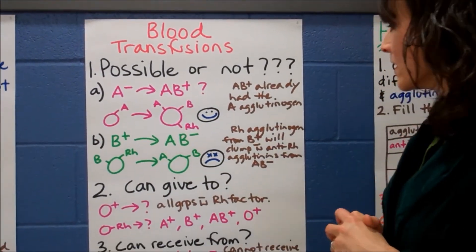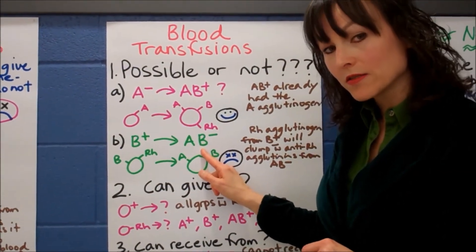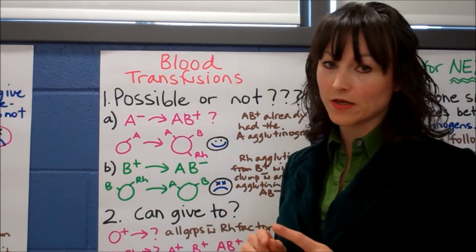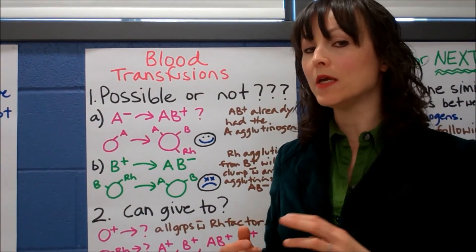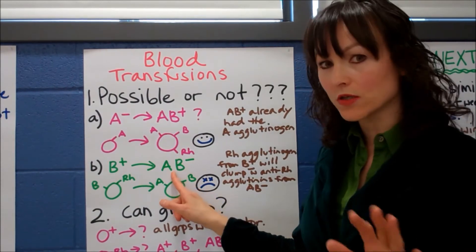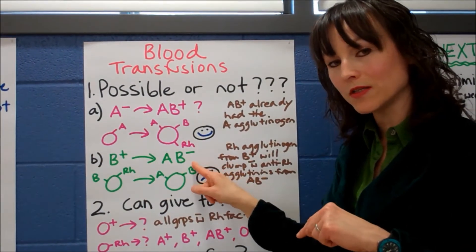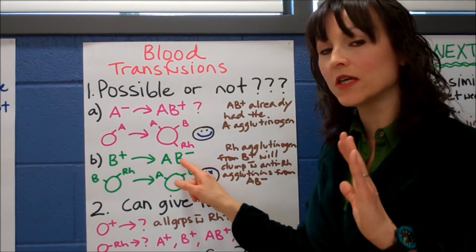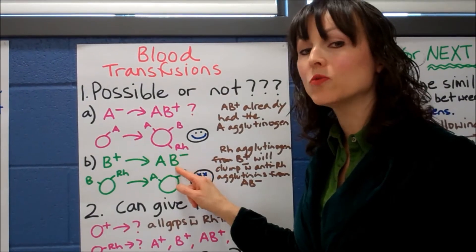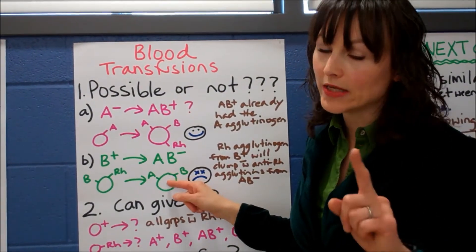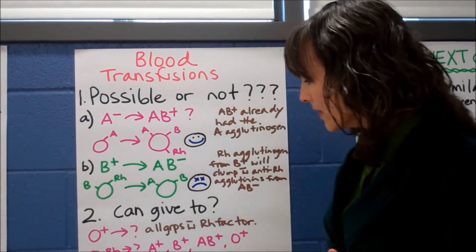Do you think I could reverse this? Do you think I could do AB plus to A? Actually I can't. The reason why is that AB minus would have in its plasma anti-B and anti-RH. Double whammy. Not good. Let's go to B now. Can you give B plus to AB minus? So you're giving a B blood type to AB. Okay. So you're giving a B to an AB. It already has the B, right? So it sounds good. But careful. You're giving a plus to a minus blood type. You can't do that. You can never give a plus to a minus. Because if you do that, remember AB minus would have the anti-RH in its plasma. Clumping would happen and that's glutination.